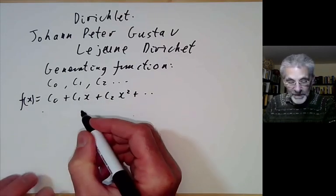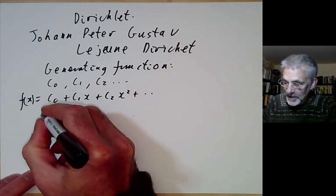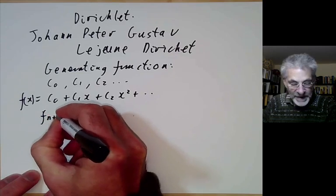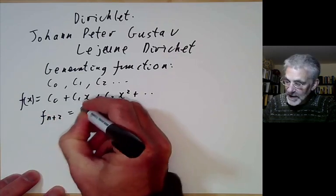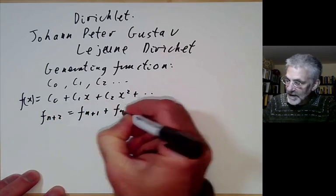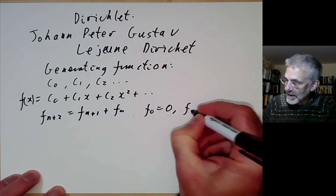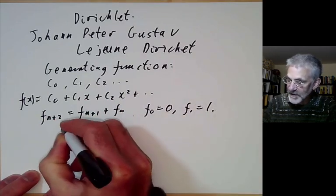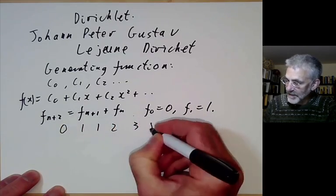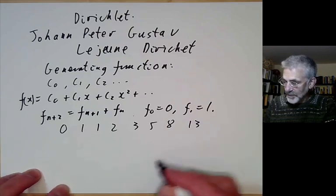As one example, consider the Fibonacci numbers. They have the property that f(n+2) = f(n+1) + f(n), with f(0) = 0 and f(1) = 1. The first few numbers go 0, 1, 1, 2, 3, 5, 8, 13, and so on.